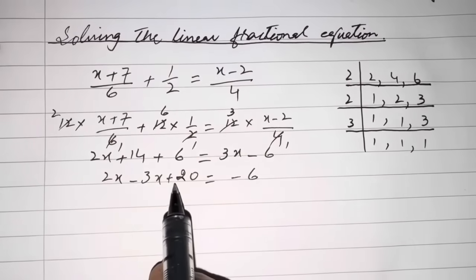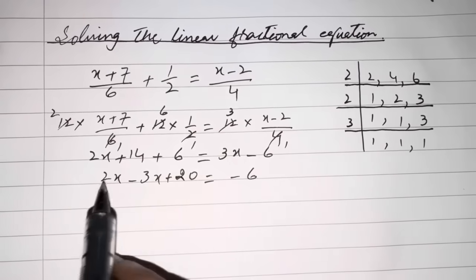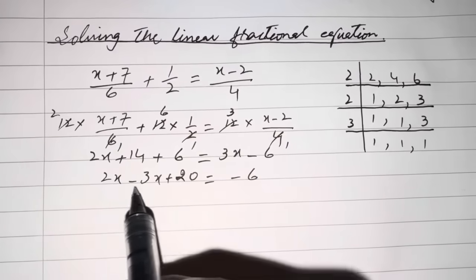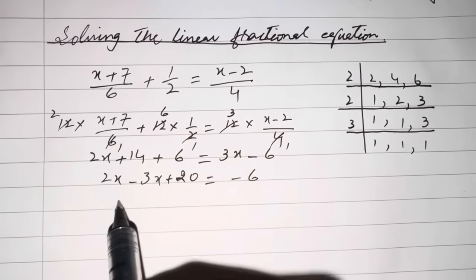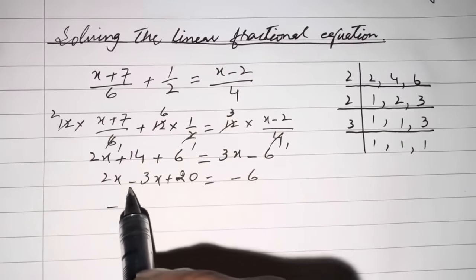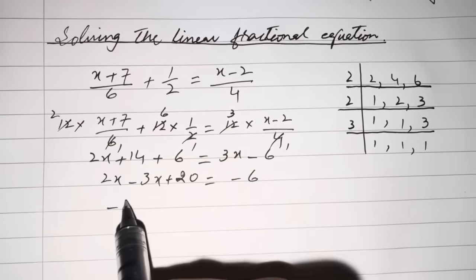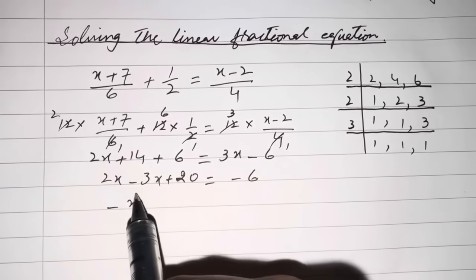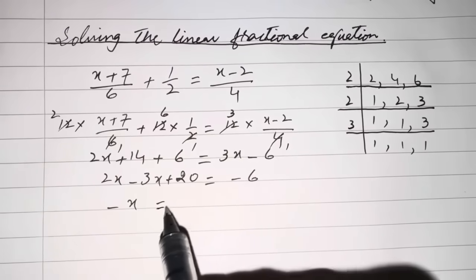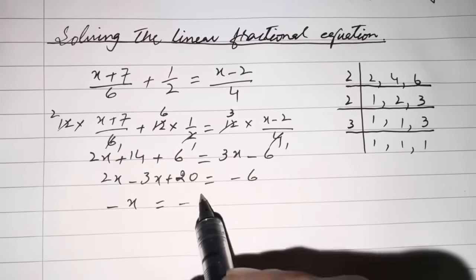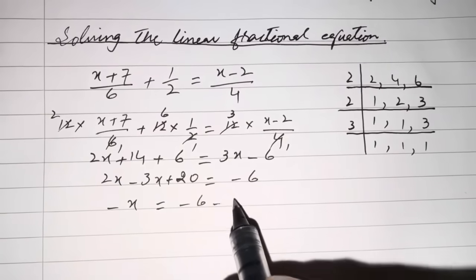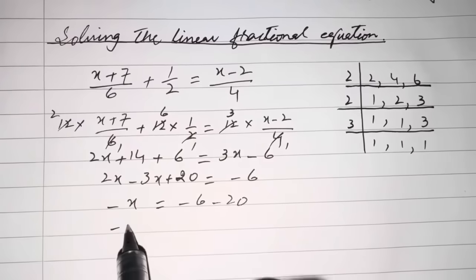Now take the 20 from this side to the other side. When you subtract 2x minus 3x, you subtract bigger from smaller, so the sign will be negative. 3 minus 2 becomes 1, so negative x. Now take the 20 to the other side: minus x equals minus 6 minus 20.